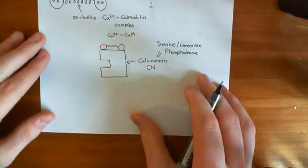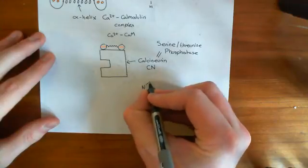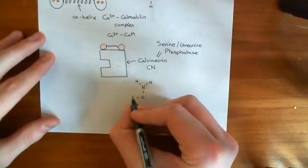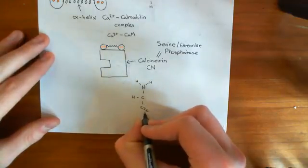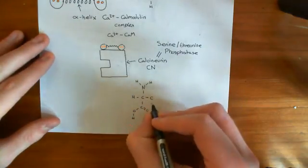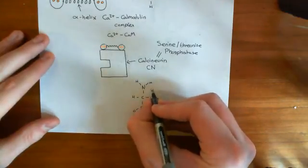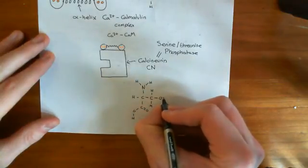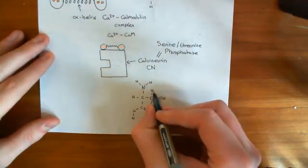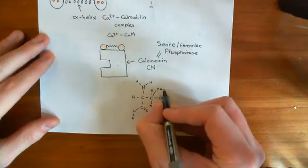Let me just remind you of the structure of serine and threonine residues. So here's the basic amino acid structure: the amino group, the alpha carbon with a hydrogen, and the carboxyl group. In the case of serine, what you have is a methylene group and a hydroxyl group as the R-group. Threonine is exactly the same, but instead of having a proton on that carbon, you have a methyl group instead.